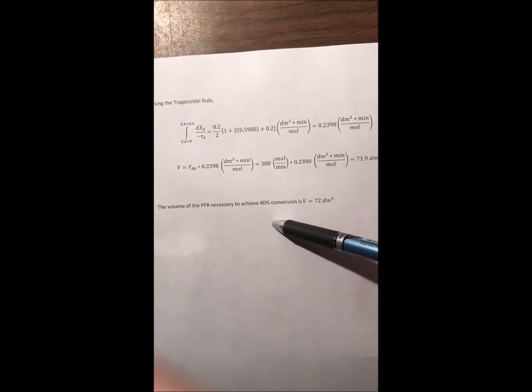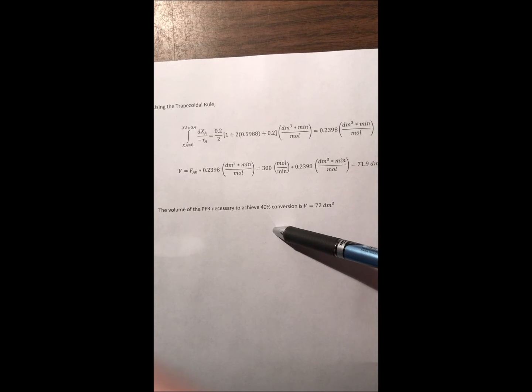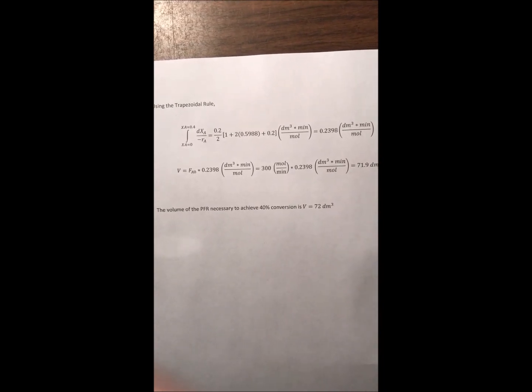And our final answer for this problem is that the volume of the PFR necessary to achieve 40% conversion is 72 decimeters cubed. Thank you.